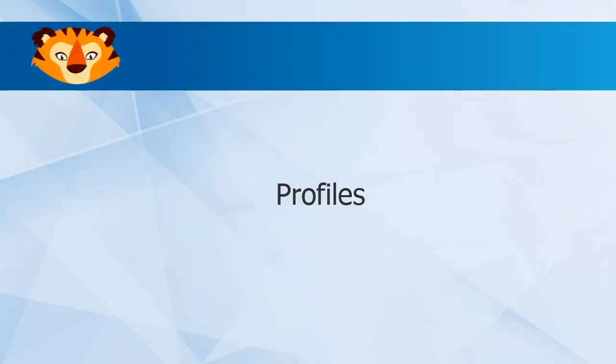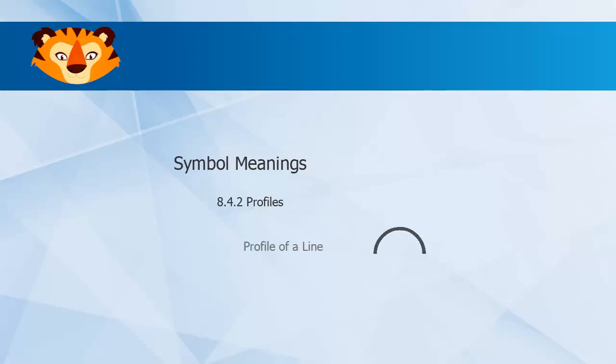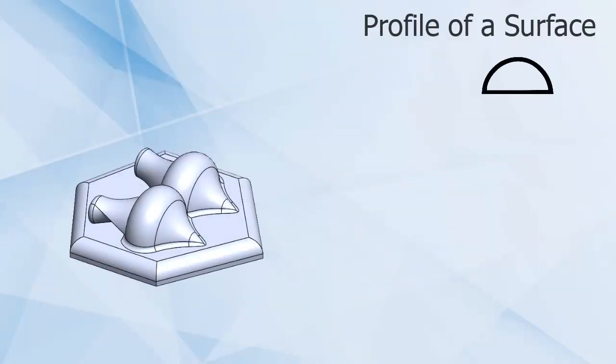Our last set of combination controls are both profiles. These include profile of a line and profile of a surface. We'll first look at profile of a surface, as it is the most common of the two and likely what you'll use.